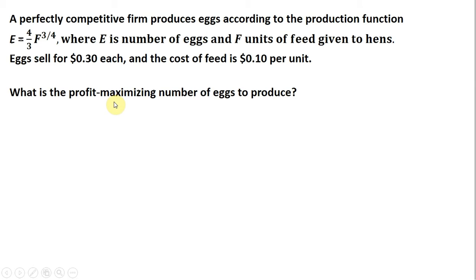What is the profit-maximizing number of eggs to produce? We'll set up a profit function: total revenue minus total cost. Total revenue is the price of eggs. A competitive firm takes the price as given, so that's $0.30.